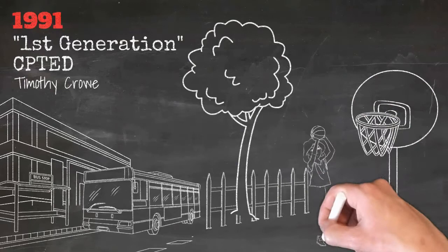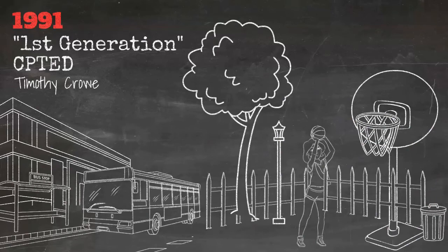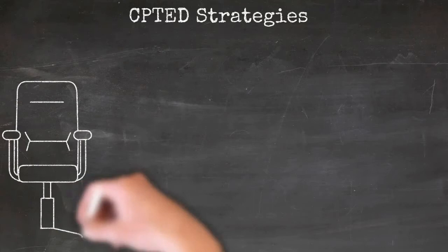In what many now refer to as first-generation CPTED, he introduced the 3D approach, which helps us understand there should be no confusion between what and who a space is for and how it is designed. Crowe gave us three overlapping strategies for designing and managing space to achieve desired behavior and outcomes.